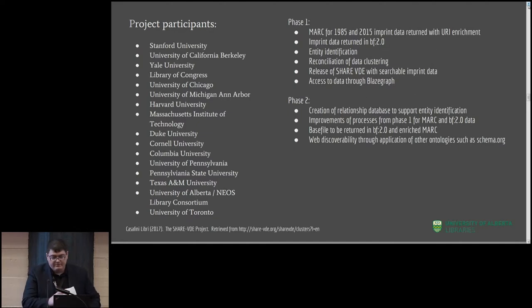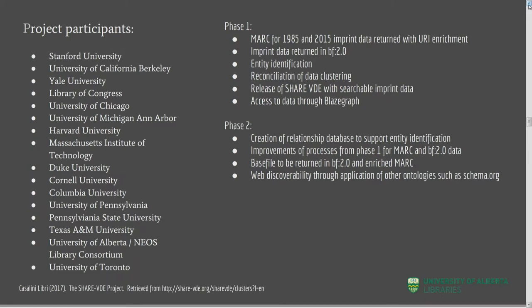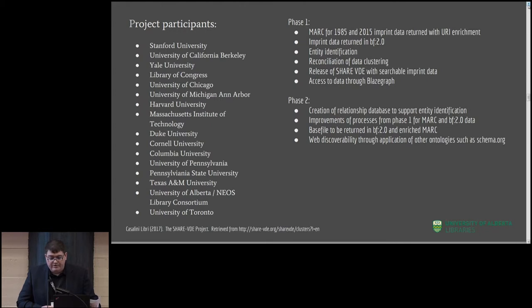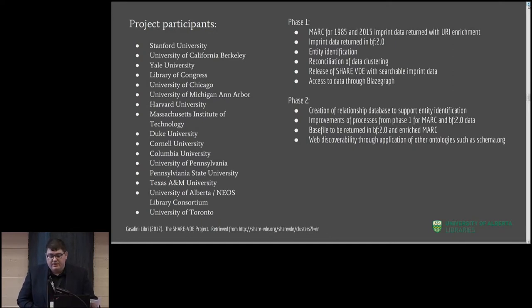You can see the project participants on the left, including the Library of Congress, and a range of very large research libraries within the United States and Canada, which combine to make for a very substantial data set being processed. With phase one, MARC from 1985 and 2015 imprints was returned with URIs enriched in the MARC format, and that data was also returned in Bibframe 2.0. Through the processes they worked on entity identification, reconciliation, and data clustering, released the shared virtual discovery environment tool with searchable imprint data and access through BlazeGraph. Phase two involved creation of a relationship database to support entity identification, improvements to the process in general. The base file of the participating libraries was returned — or slotted to be returned, still ongoing — in Bibframe 2.0, and the MARC data is also to be returned with enrichments and URIs added.